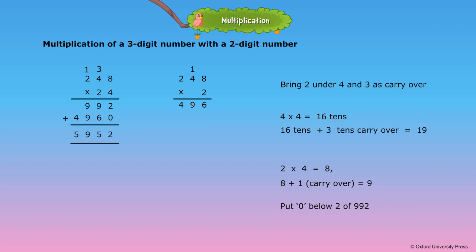So, 248 multiplied by 24 is equal to 5,952.